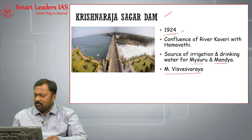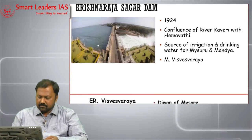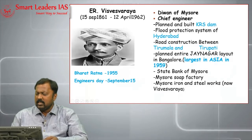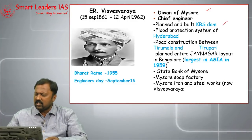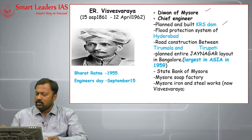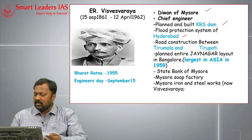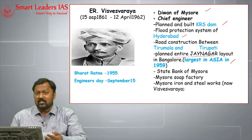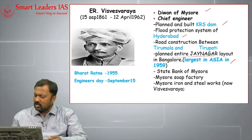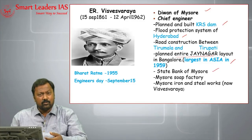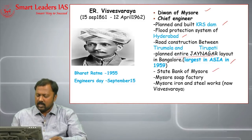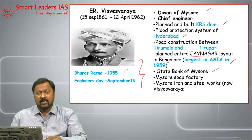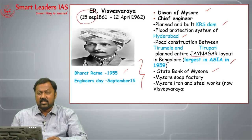This dam was planned and executed by M. Visvesvaraya, the Divan of Mysore, who worked under the Udayar rulers as chief engineer. Beyond this dam, he gave a flood protection system to Hyderabad, constructed the road between Tirumala and Tirupati, planned the entire Jayanagar layout in south Bangalore (at the time the largest of its kind in Asia), contributed to starting the State Bank of Mysore, the Mysore Soap Factory, and Mysore Iron and Steel Works. He was awarded the Bharat Ratna in 1955, and his birthday — 15th September — is recognized as Engineers' Day.